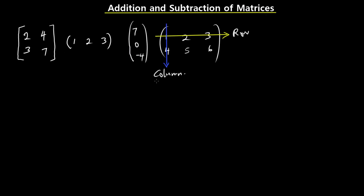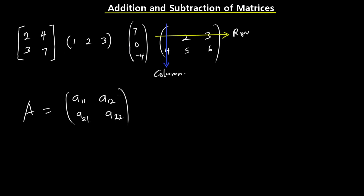Let's look at how we name the elements of a matrix. If you have a matrix A, you can have the elements named as A11, A12, A13 for the first row, and A21, A22 for the second row. As I mentioned, we have rows and columns in matrices. Whenever we want to name or categorize a matrix, it's shown in the form of rows times columns. So for a matrix with two rows and three columns, we say this is a 2 by 3 matrix.